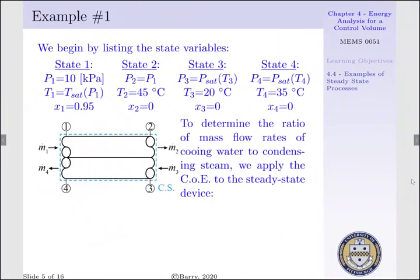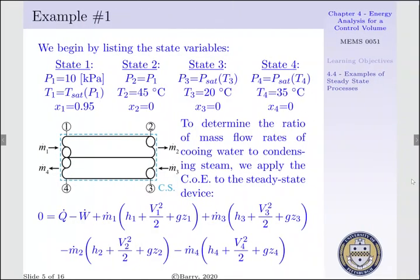To analyze the system, we apply conservation of energy to the entirety of our heat exchange system. The time-rate change of energy is equal to zero, which equals the heat supplied to our control volume less the work done by our control volume, plus the sum of mass flows into our system times their respective enthalpies, kinetic energies, and potential energies, less the sum of mass flows out of our system times their respective enthalpies, kinetic energies, and potential energies. So M.1 and M.3 enter the control volume each carrying an enthalpy, a velocity, and a change of elevation, while M.2 and M.4 exit each carrying an enthalpy, a velocity, and an elevation.